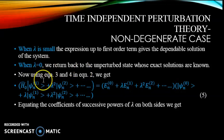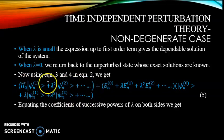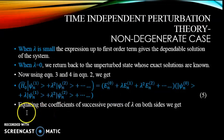Now using equations 3 and 4 in equation 2, we get an expression where we have substituted the power series expansions for E_n and psi_n. If we equate the coefficients of successive powers of lambda on both sides, we get equations for each order.